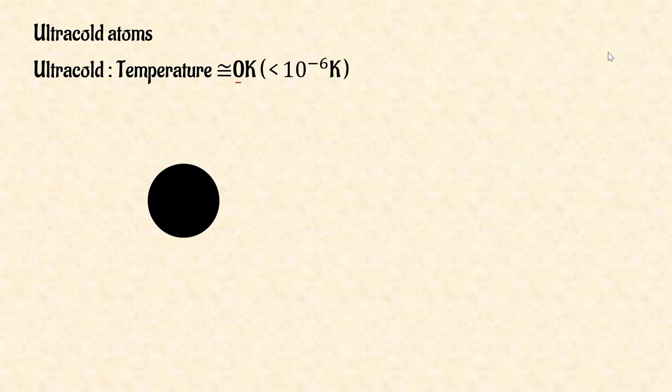First, what are ultra-cold atoms? We can infer features from the name. Ultra-cold means its temperature is near zero Kelvin, and the standard of temperature is one micro-kelvin. So ultra-cold atoms are atoms which temperature is under one micro-kelvin.